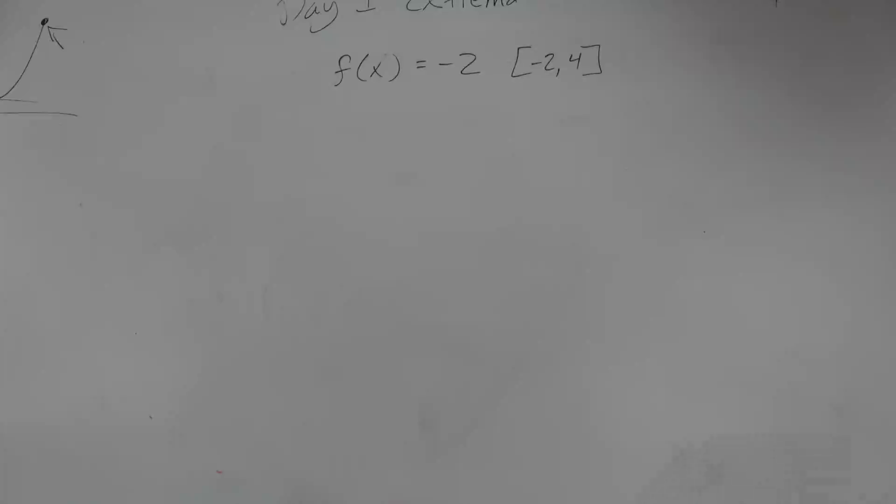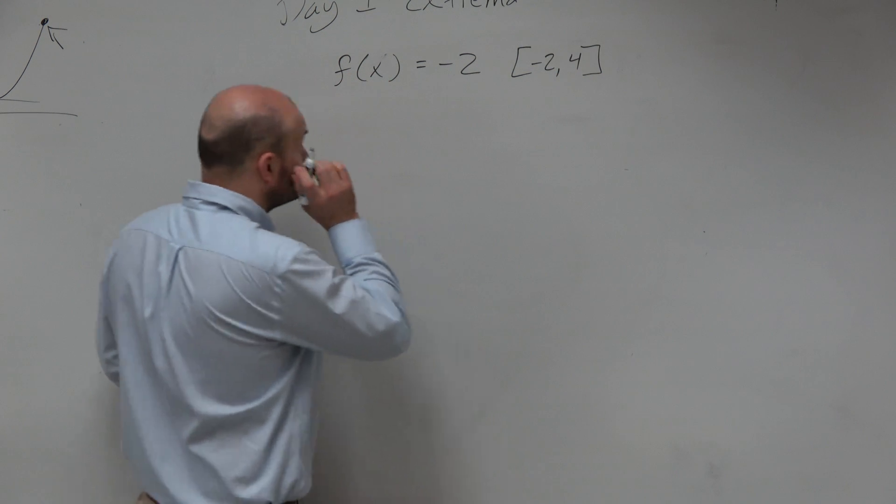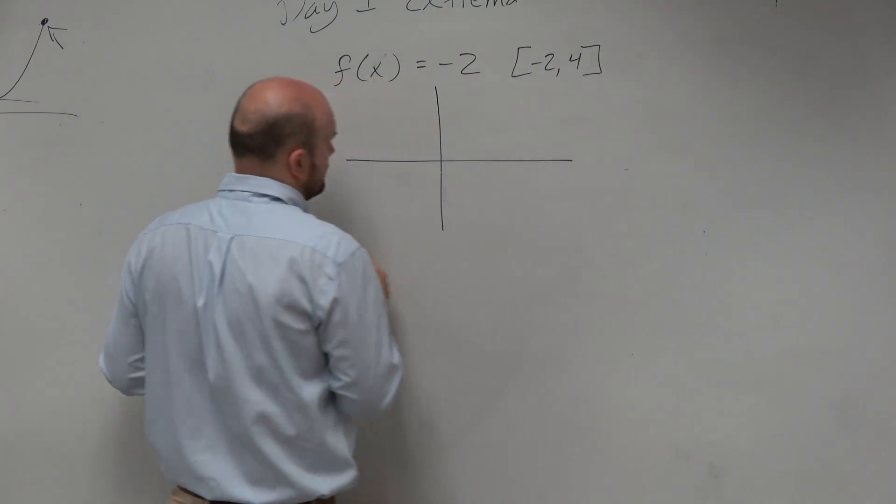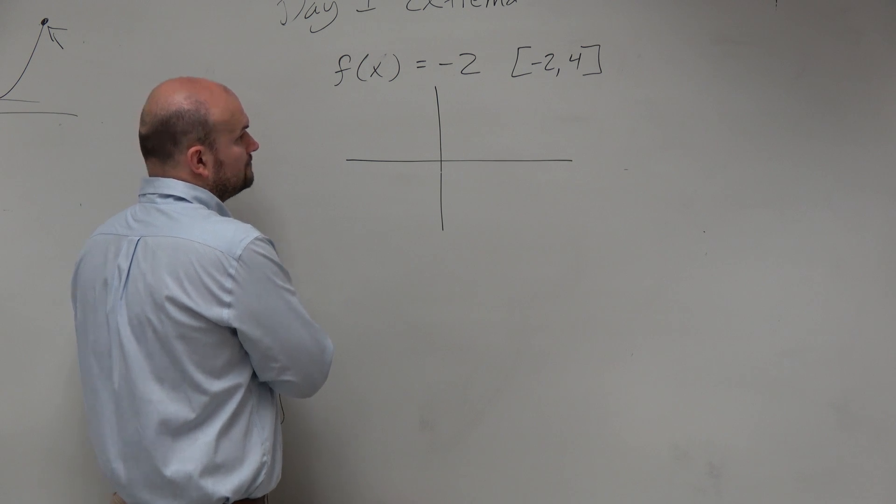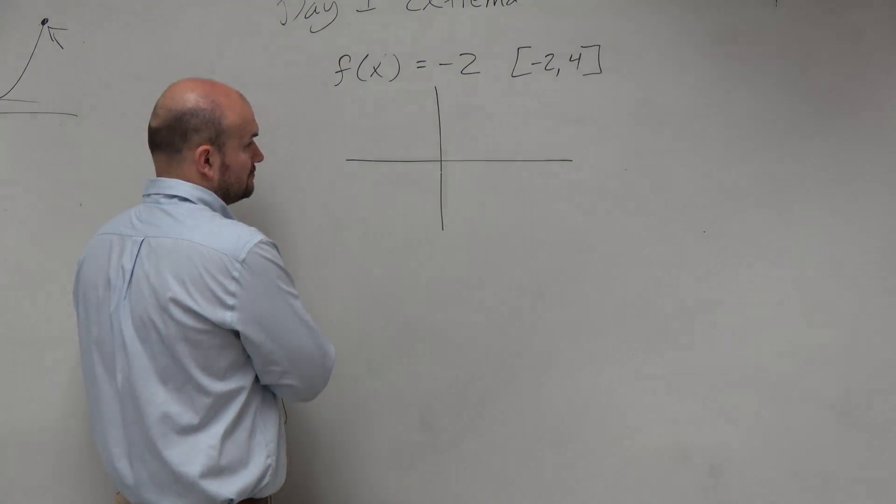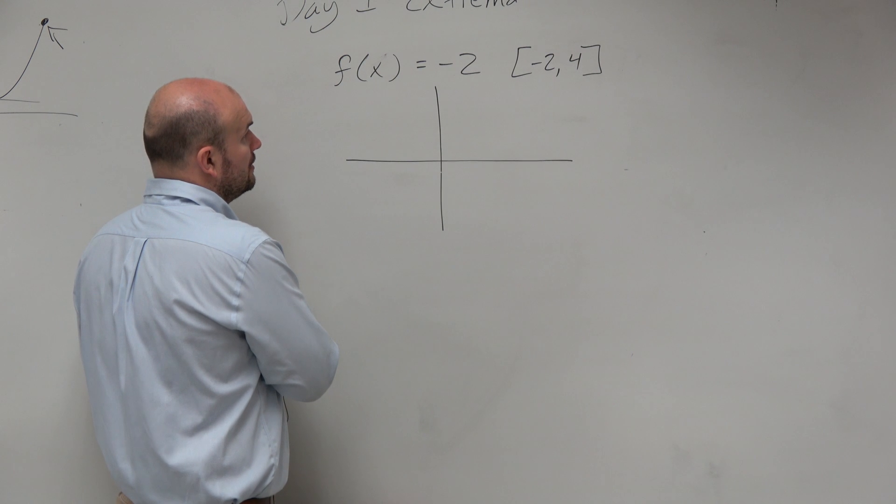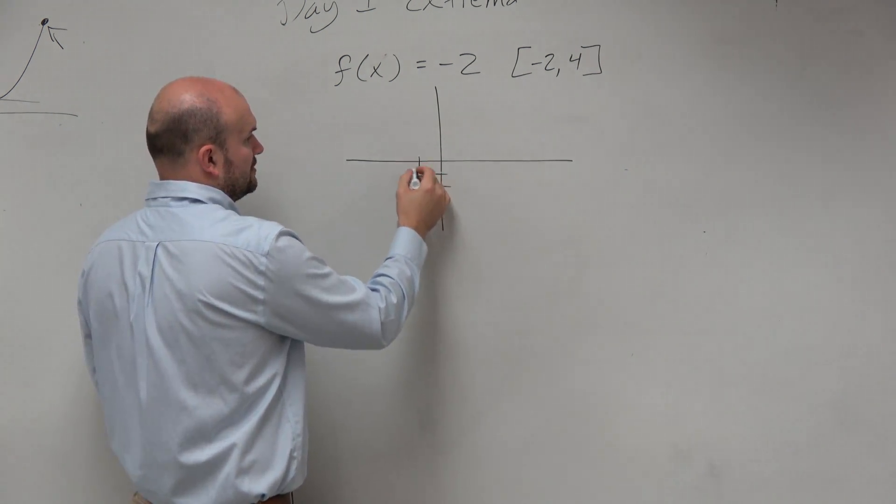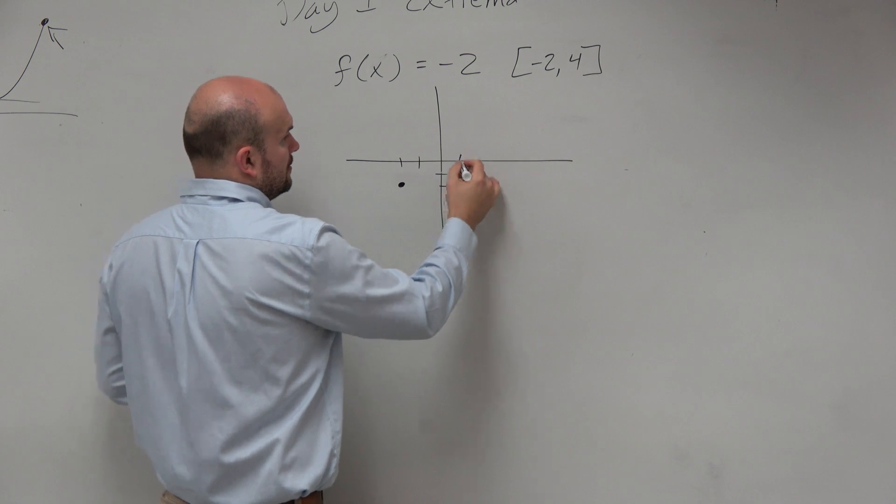And obviously, let's look at the graph here. So we have negative 2, 1, 2, and we're going to 1, 2, 1, 2, 3, 4.